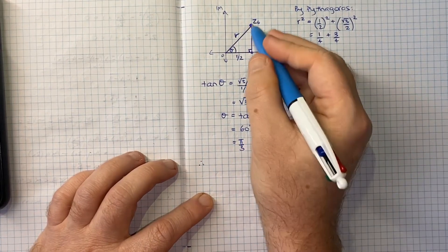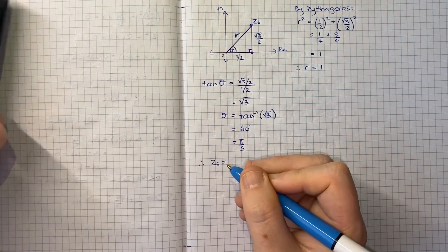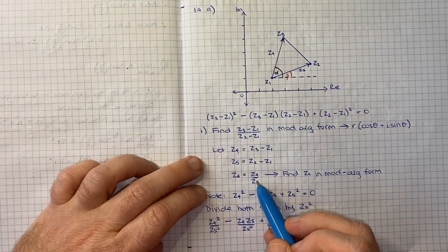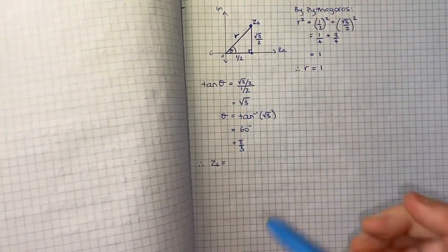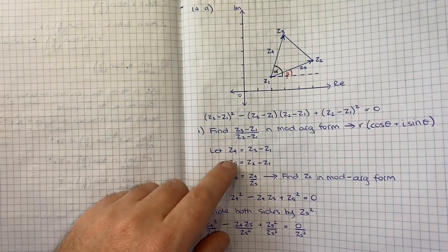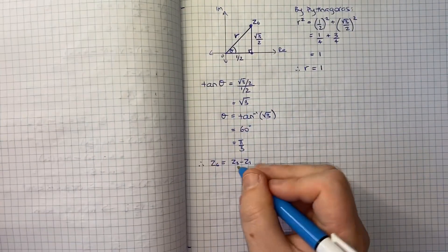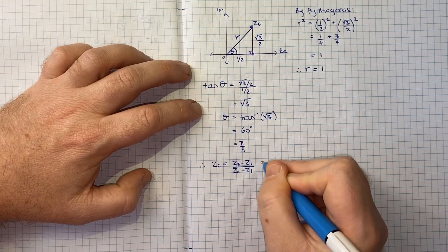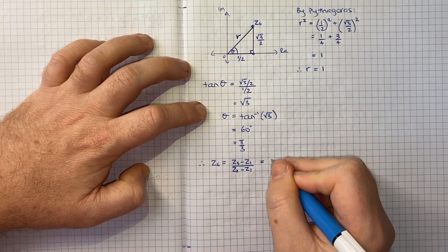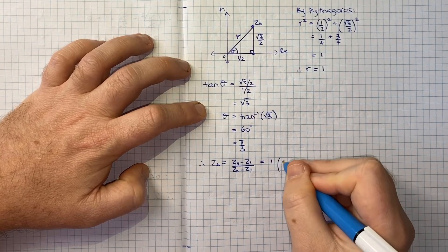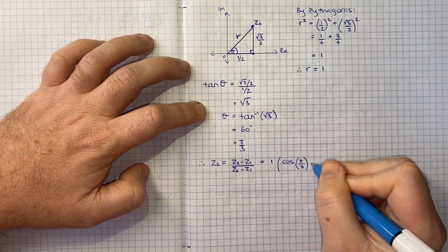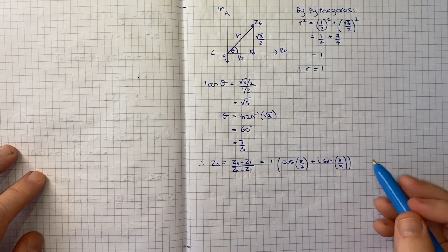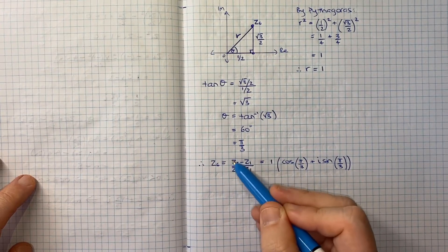I think in extension 2 the expectation would be that you write it in radians. Therefore we can conclude that our Z6, which if we go right back to our definition, Z6 is Z4 over Z5, or in other words Z3 minus Z1 divided by Z2 minus Z1, that is what we've just found and that's what we were asked to find. In mod arg form, that is equal to just R, which is just our 1, times the cos of our theta, the cos of pi over 3, plus the I sine of pi over 3. And that's it. That's how we write this complex number in mod arg form.